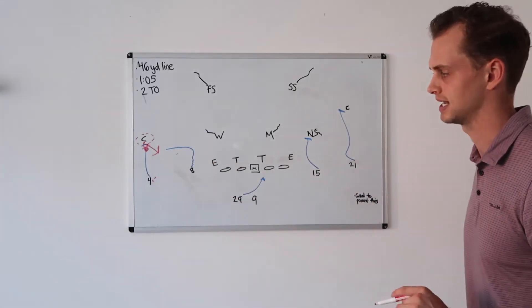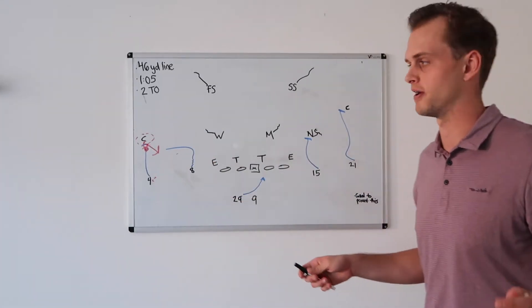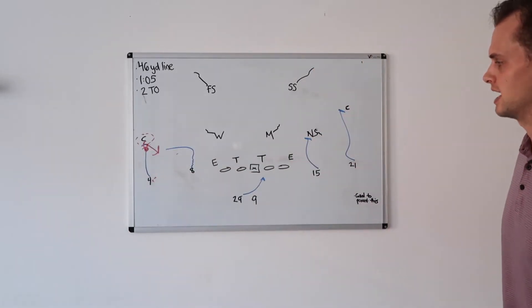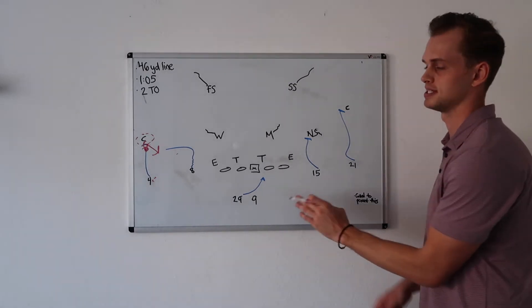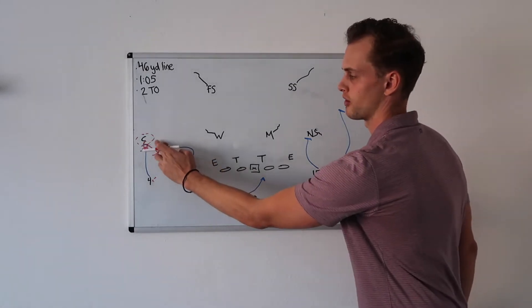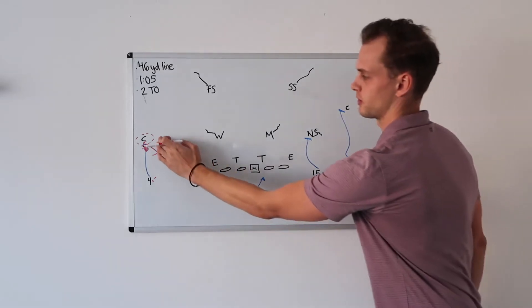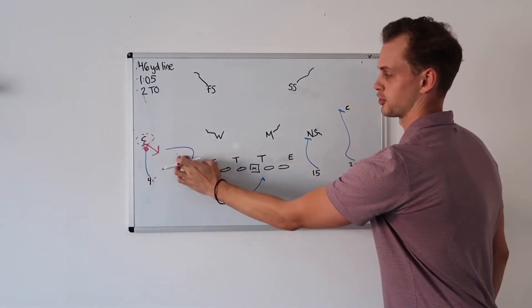You got to be frustrated if you're an Arizona fan, because this is exactly why you call this coverage. You call this coverage to have a cover two corner sitting right there and jump this out route and not get blocked by Bru McCoy. That is what that corner is taught. That corner doesn't do a good job, or vice versa, Bru McCoy does a great job and he's able to block this corner.